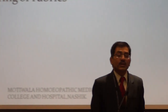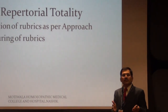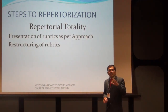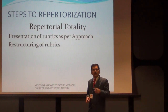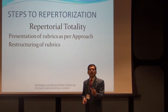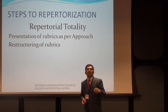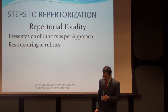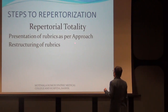After Boenninghausen's approach comes Boger's approach. Boger goes with all approaches — physical generals, causative modality, pathological generals are important, clinical rubrics are also important. Dr. Boger believes whatever is in the patient is reflected in the symptoms, therefore those are also important. Mostly, Dr. Boger goes in a Boenninghausen's way. In repertory practice, there is presentation of rubrics as per approach, and there is restructuring of rubrics — meaning which repertory gives the proper rubric and proper remedies.